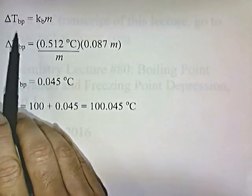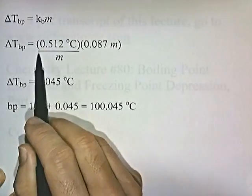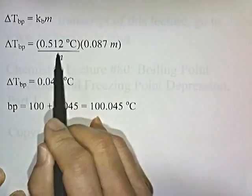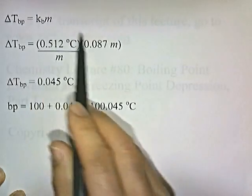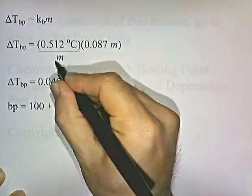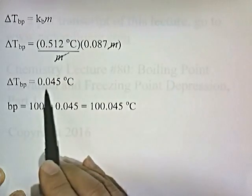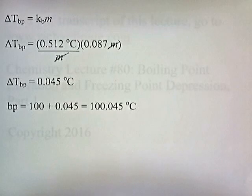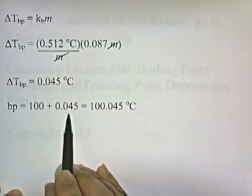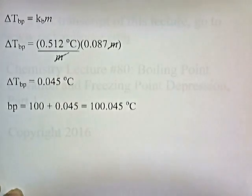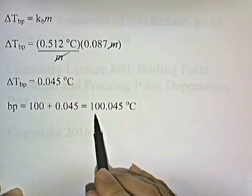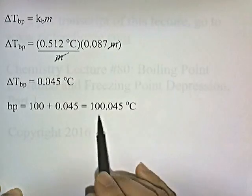Now let's calculate the boiling point. The change in temperature of the boiling point is KB times m. KB is 0.512 degrees Celsius per molal, and the molality is 0.087. The molalities cancel. 0.512 times 0.087 gives 0.045 degrees Celsius. When you add something to water it raises the boiling point, so the new boiling point is 100 plus 0.045, which equals 100.045 degrees Celsius.